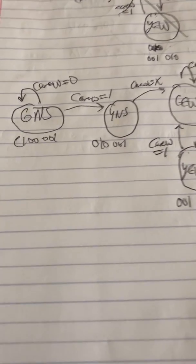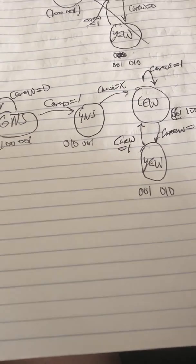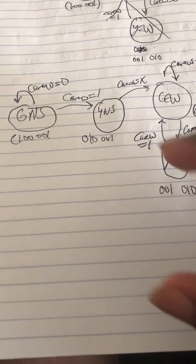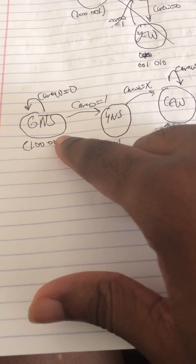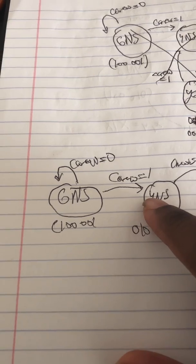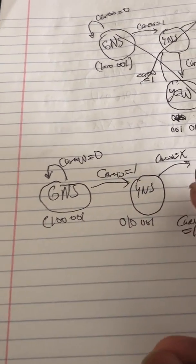Here's my state diagram for the traffic light. If the car east-west signal is on, it will stay in the green east-west state. You have green north-south as the output. If car east-west equals zero, it stays; if car east-west equals one, it transitions to yellow north-south.